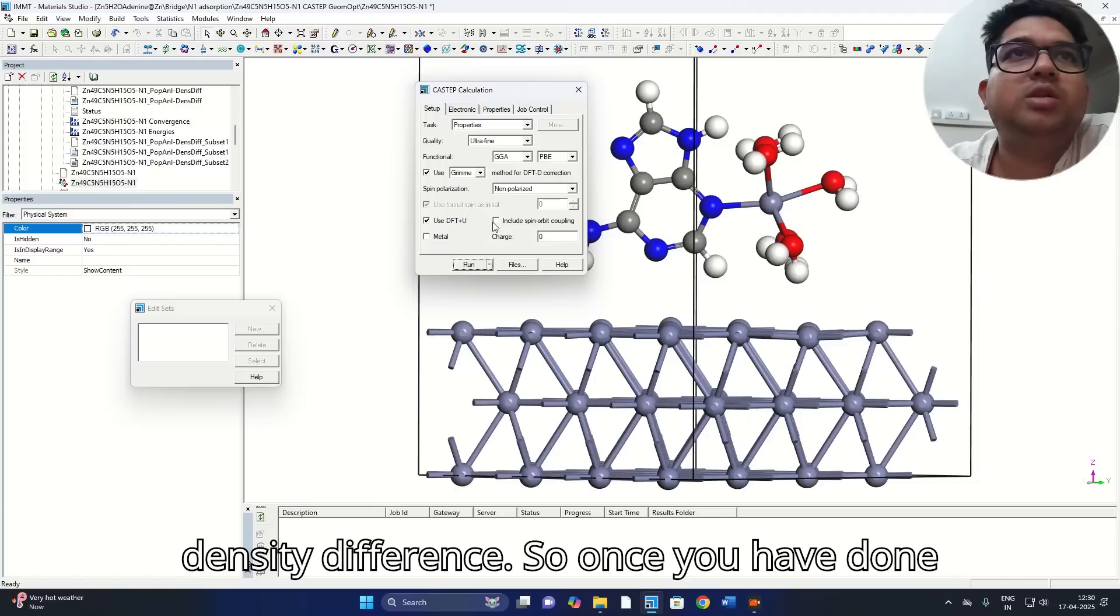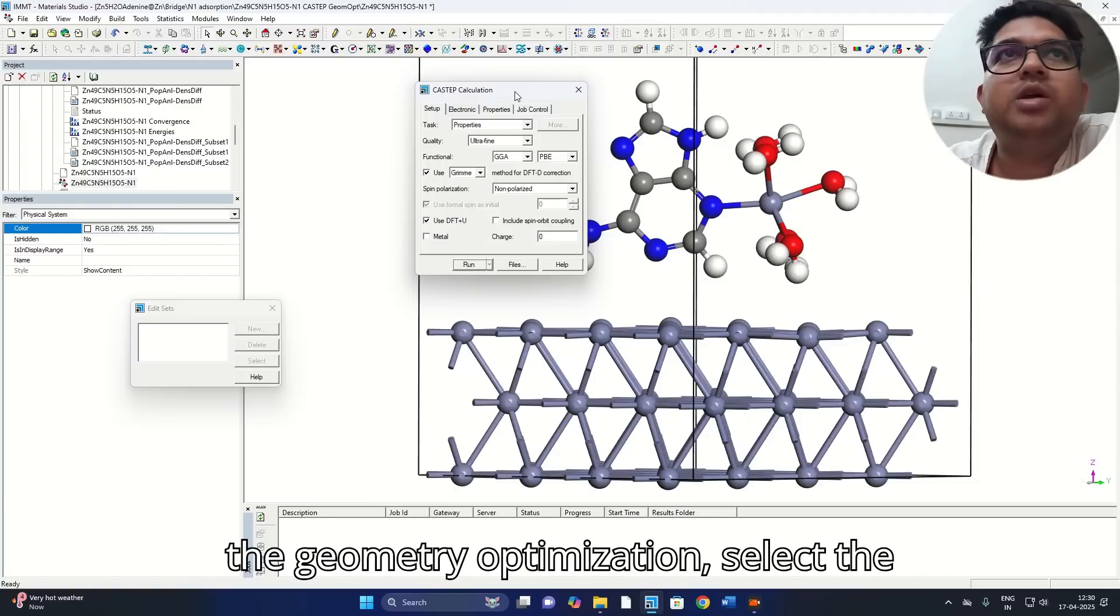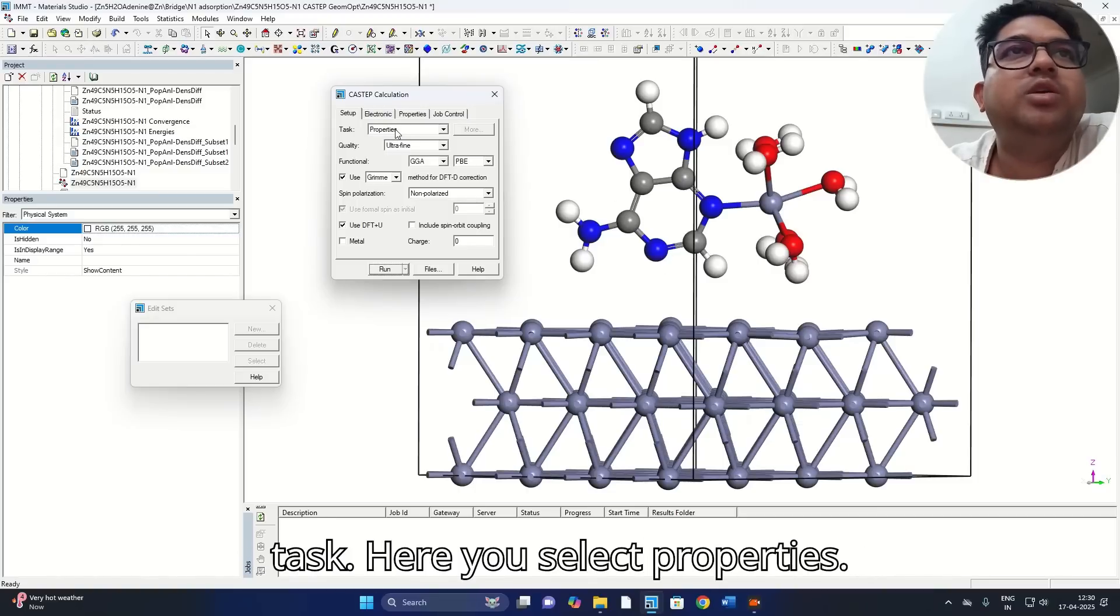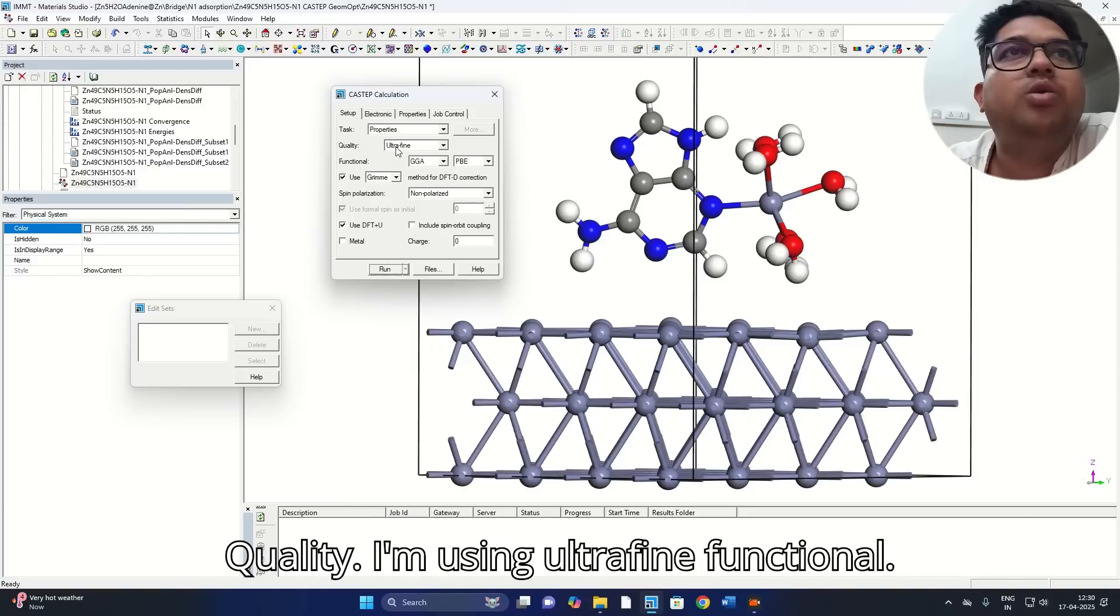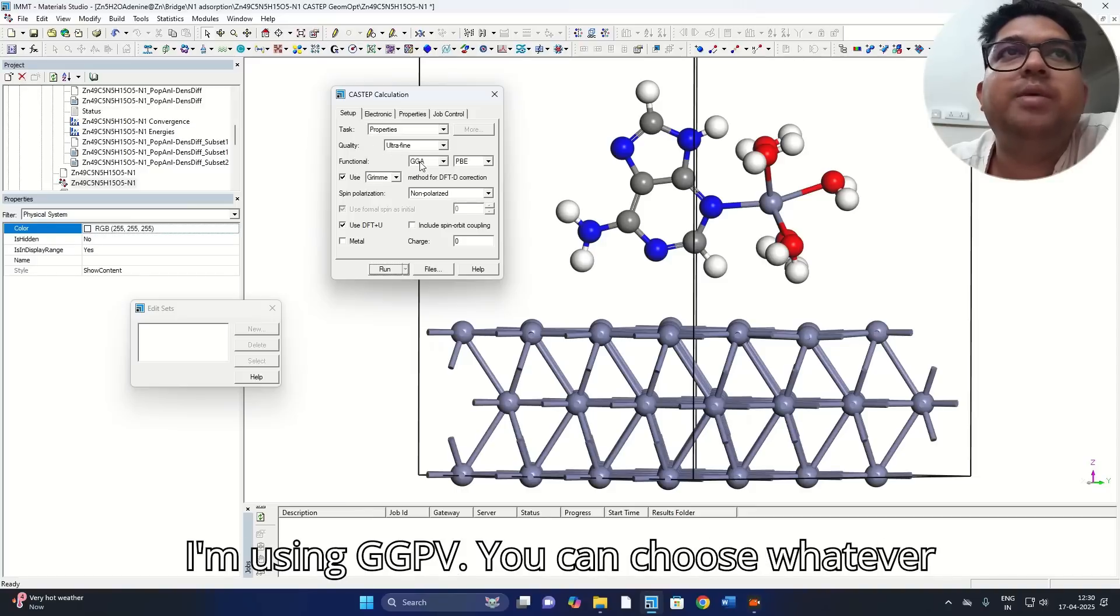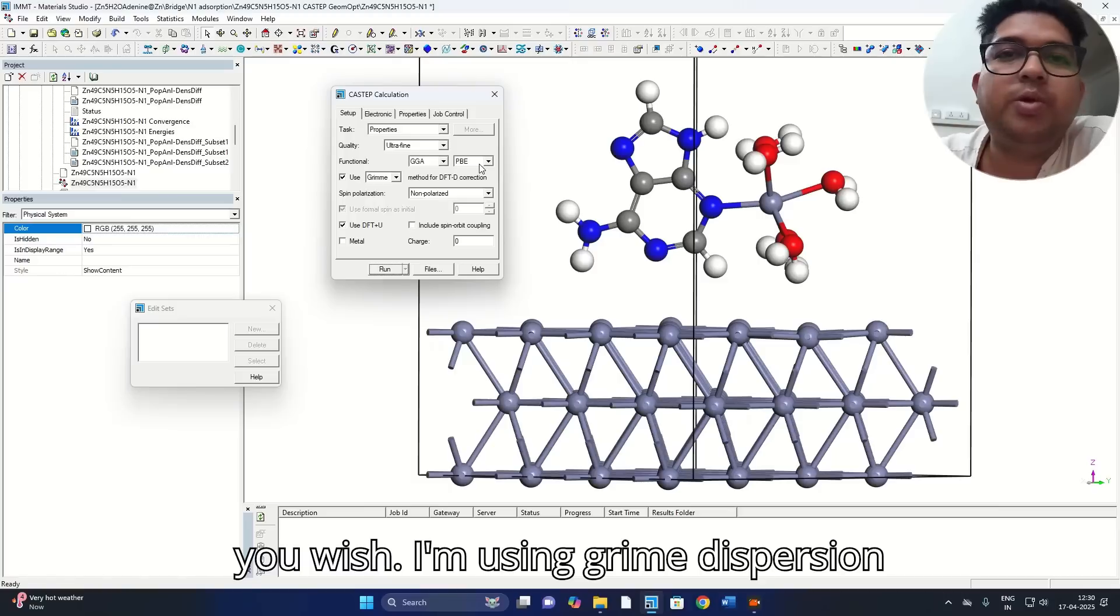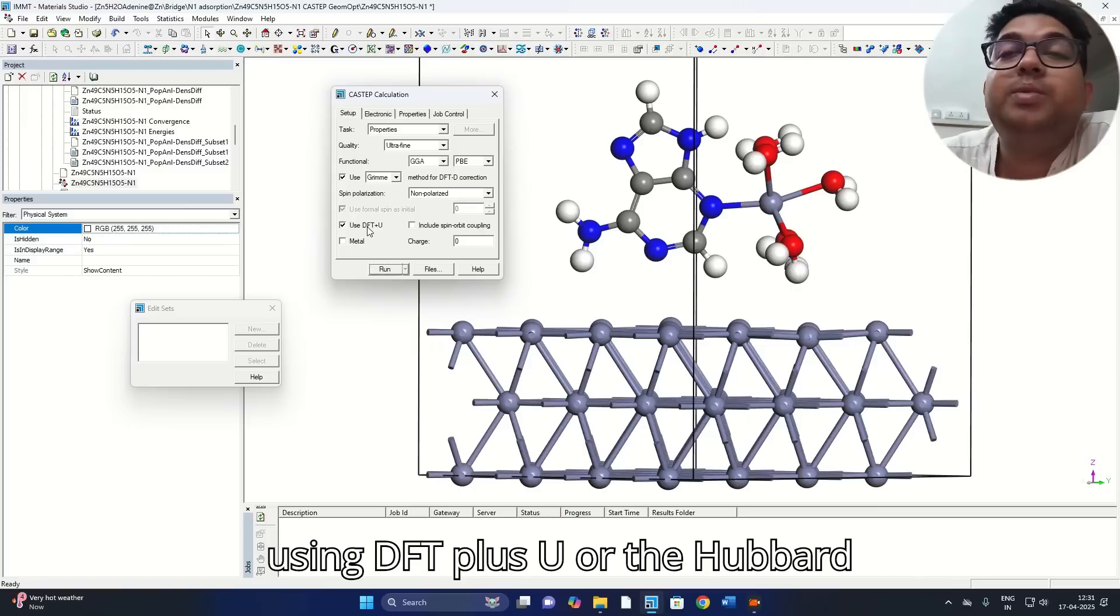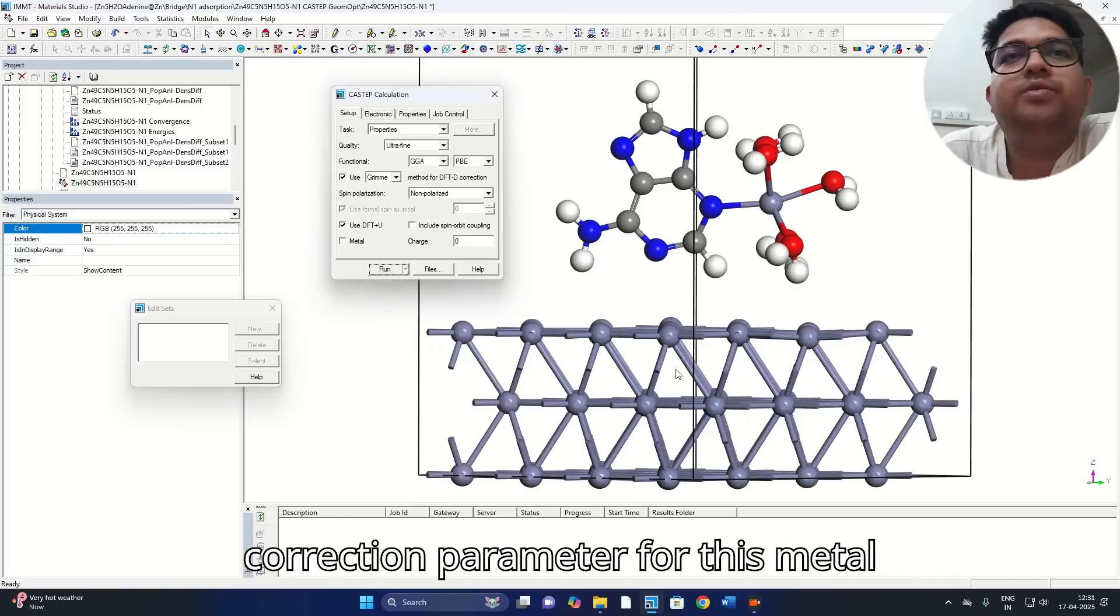So once you have done the geometry optimization, select the output geometry and then go to the task. Here you select properties, quality I'm using ultrafine, functional I'm using GGA PBE. You can choose whatever you wish.